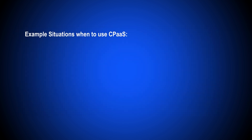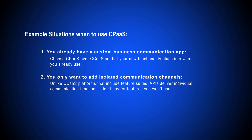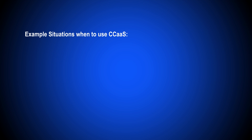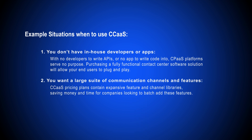You'll want to use CPaaS when you already have a communication app or when you only want to add isolated channels. On the other hand, you'll want to use CCaaS when your team doesn't have an app or in-house developers, or to add a large library of communication channels and features.